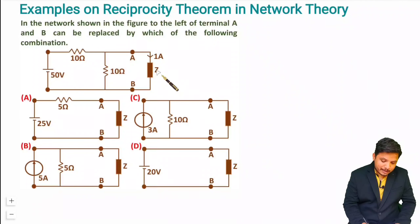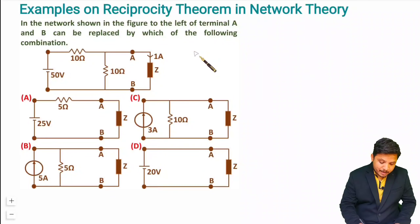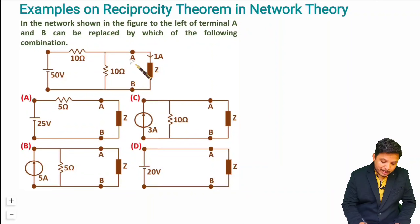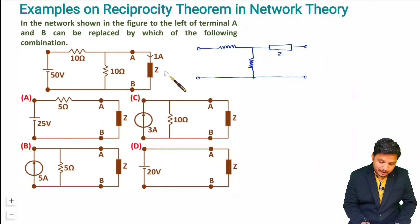What we will do is apply the reciprocity theorem, in which we interchange input and output, and then try to identify the value of Z. Let me draw this network first, and then I'll show you how to apply the reciprocity theorem. I have redrawn the circuit, and now I will interchange the input and output.